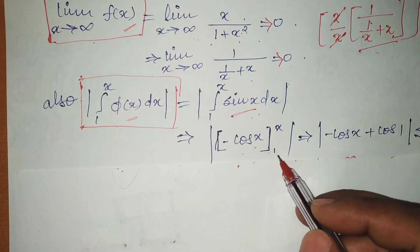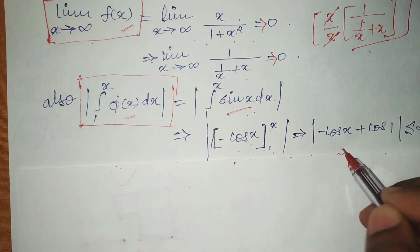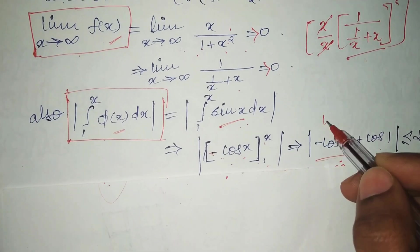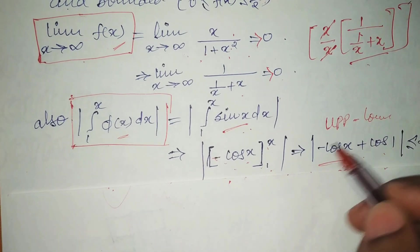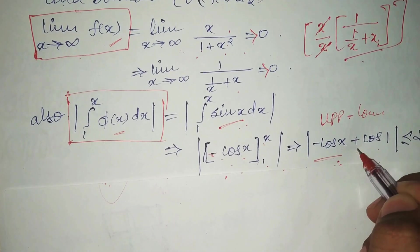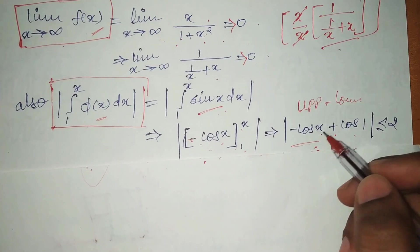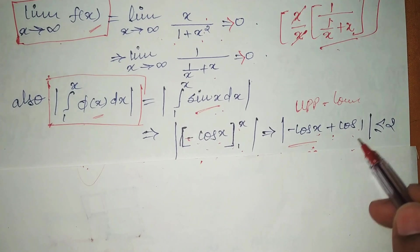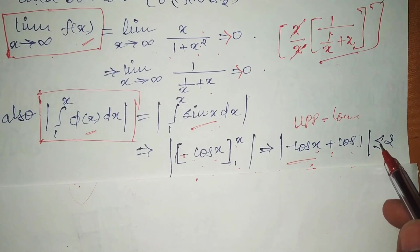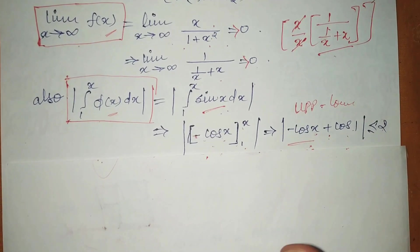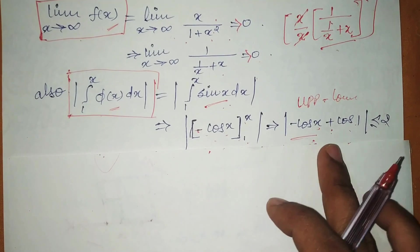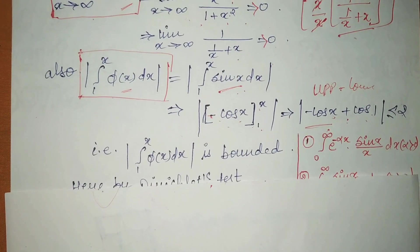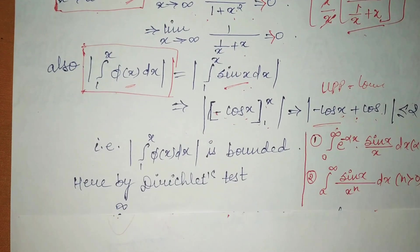Now, for any value of x, we always have |cos 1 − cos x| less than or equal to 2. We will never get a value greater than 2. So this integral is bounded. The third condition is also fulfilled.